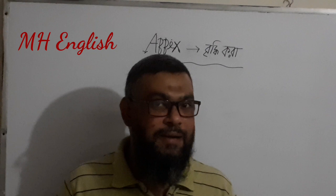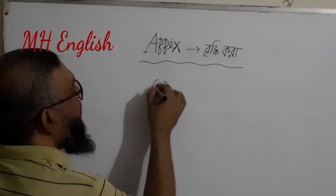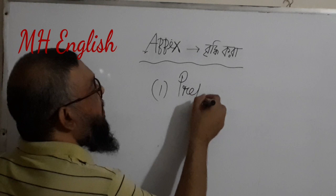How many types of affix are there? Affix is three types. One is prefix. What is prefix? It comes before the word.